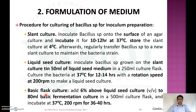The basic flask culture method involves adding 6% or above liquid culture to 80 ml of basic fermentation media in a 500 ml culture flask, then incubating at 37°C at 200 rpm for 36 to 40 hours. This is the most commonly used method for the preparation of inoculum.